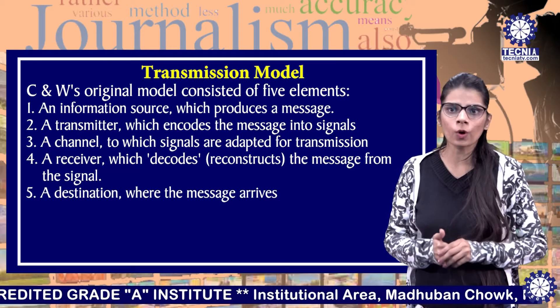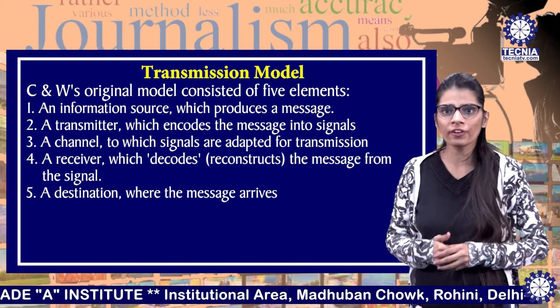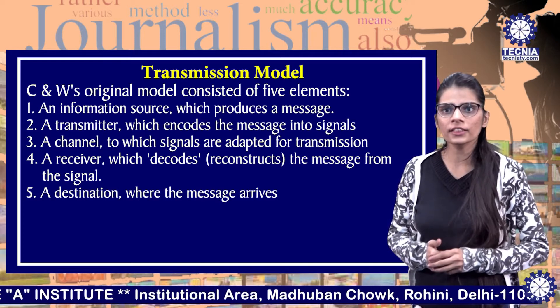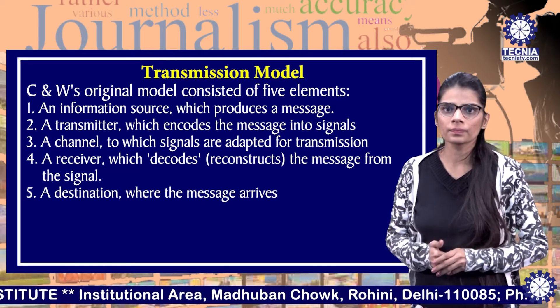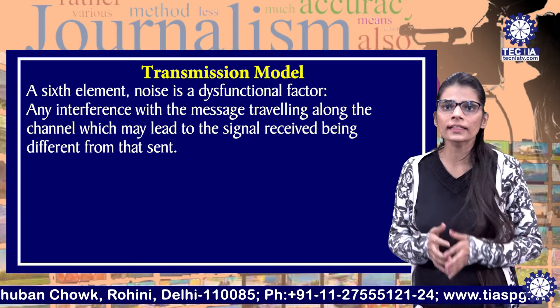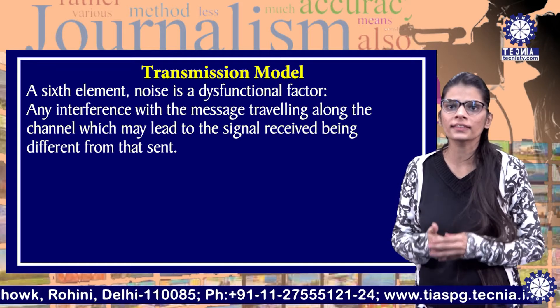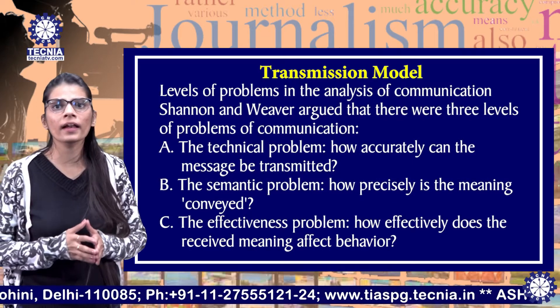First, an information source which produces a message. Second, a transmitter which encodes the message into signals. Third, a channel to which signals are adapted for transmission. Fourth, a receiver which decodes the message from the signal. And fifth, a destination where the message arrives.